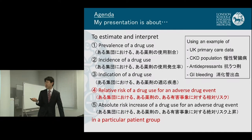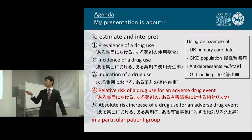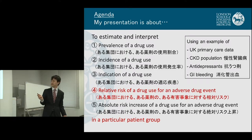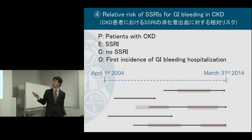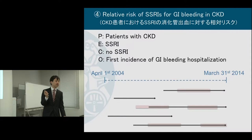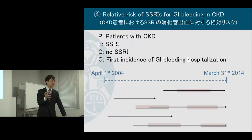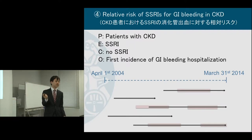The relative risk of a drug use for an adverse drug event in a particular patient group, using an example of GI bleeding of SSRI as part of antidepressants. This is the PECO framework again. The side effects of SSRI — GI bleeding — is well established because SSRI affects the function of platelets in the blood. Patients receiving SSRI are generally more likely to have GI bleeding in the general population, but it's unknown among the CKD population.